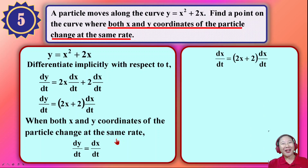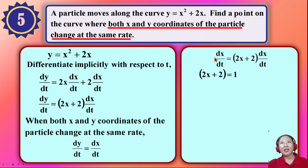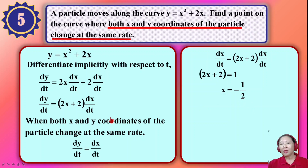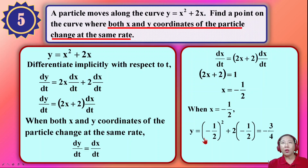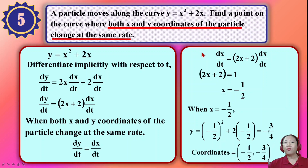I substitute dy/dt with dx/dt in the equation. Then I simplify and solve to get the value of x. Once I have x, I substitute it into the equation of y to calculate y, because the question asks to find a point — meaning a coordinate. That gives us the coordinate where x and y are changing at the same rate. Question five is done — quite straightforward.